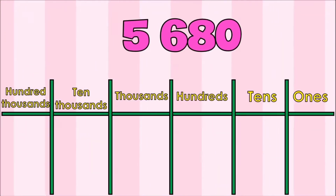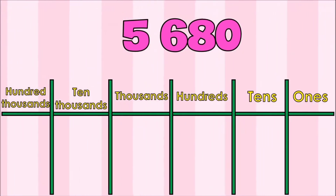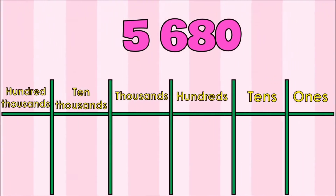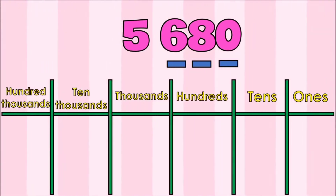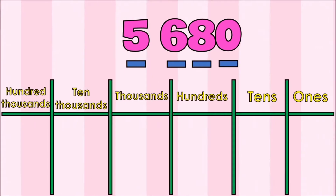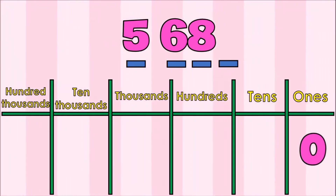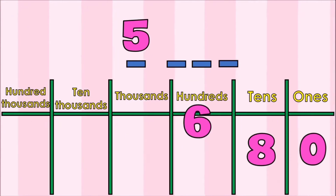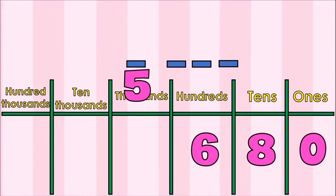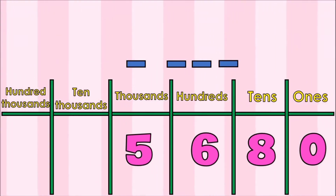Another example: I have 5,680, and 5,680 has 4 digits — 0, 8, 6, and 5. The place value of 0 is ones. The place value of 8 is tens. The place value of 6 is hundreds. And the place value of 5 is thousands. This gives us 5,680.